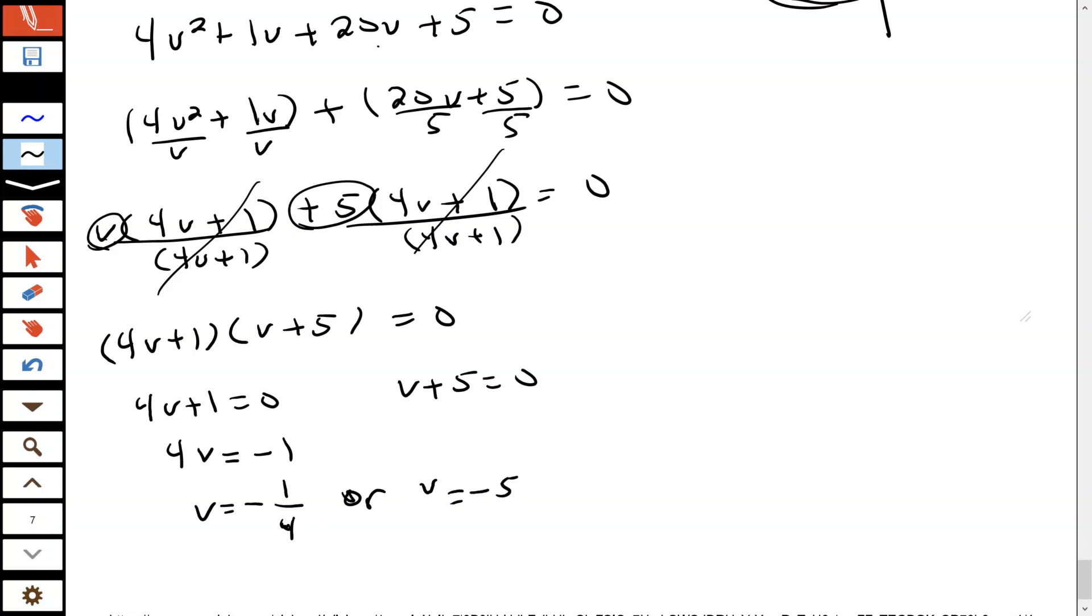So my answers are v = -1/4 or v = -5. Again, for this system, the software wants us to separate the answers by commas, and they probably already have the v = there. So v = -1/4, -5. All righty, good people. I hope you found that video to be helpful, and I will see you on the next one. Thank you.